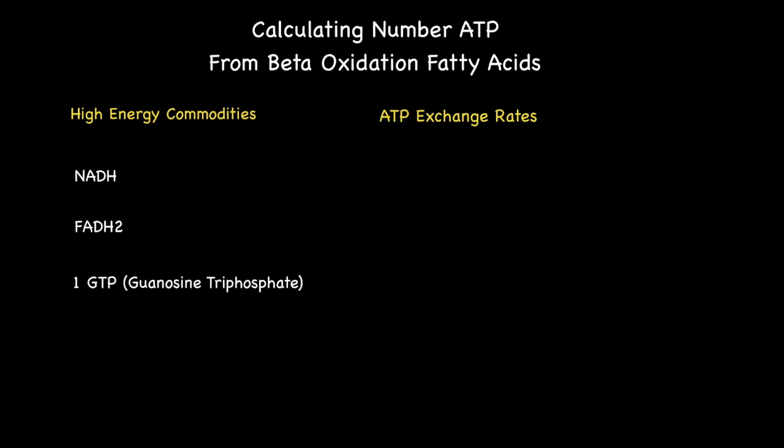It is important that we establish the exchange rates for each of these high energy commodities before proceeding any further. When connected to the electron transport chain, one NADH has an exchange rate of 2.5 ATP, while one FADH2 has an exchange rate of 1.5 ATP. Finally, one GTP directly produces one ATP within the citric acid cycle, so it has an exchange rate of only one.